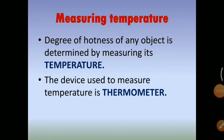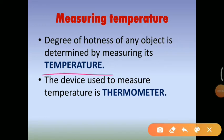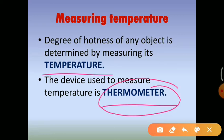That reliable measure is temperature. Temperature tells us about the degree of hotness or coldness of an object. The device which we can use to measure the temperature of an object is known as a thermometer. There are different types of thermometers.